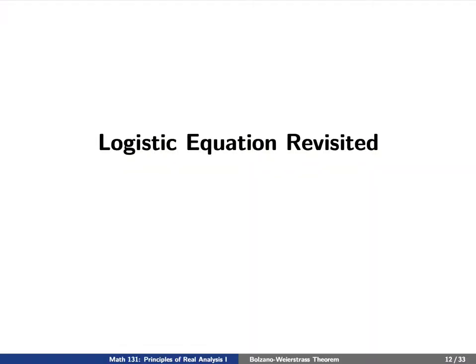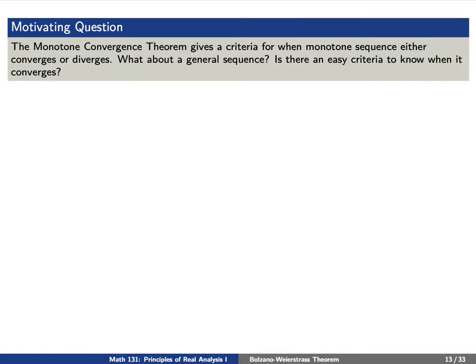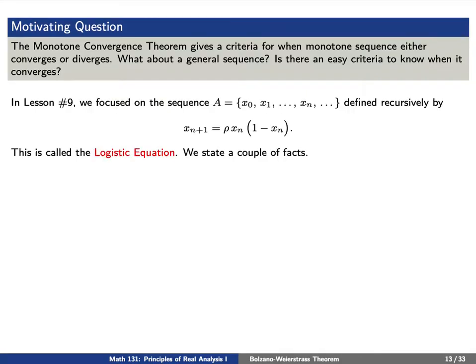Before we continue, we'd like to have some motivating questions based on the logistic equation. The monotone convergence theorem gives a criteria for when a monotone sequence either converges or diverges. But what about a general sequence? Is it easy to know when it either converges or diverges? Let's take a look at a sequence that we've seen in the past to get some intuition. We'll define our sequence capital A recursively in terms of the logistic equation: x sub n plus 1 equals rho times x sub n times 1 minus x sub n.